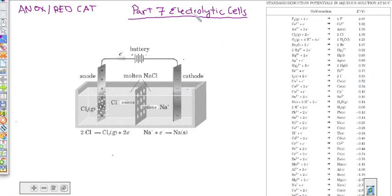Hello, welcome. This is Electrochemistry Part 7. We're looking at electrolytic cells.